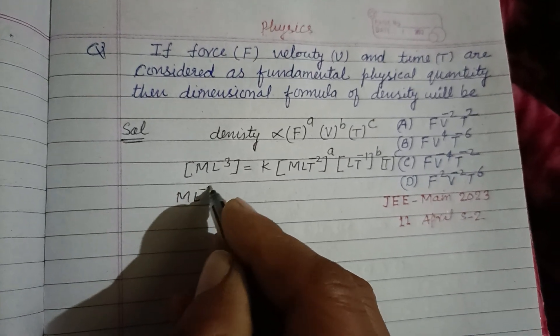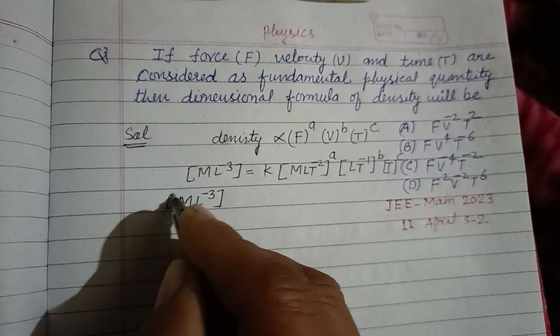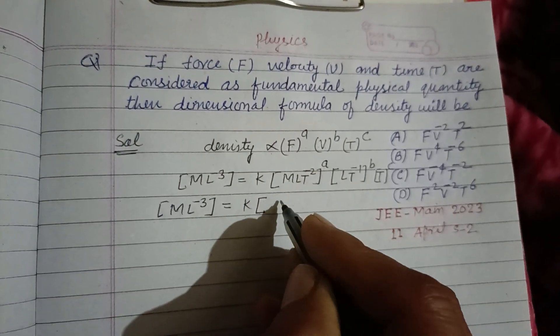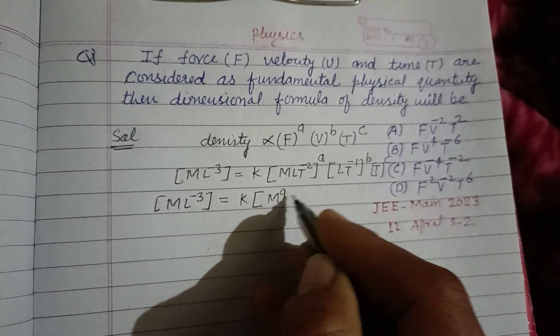So ML^-3 is equal to K times, this is M to the power A.